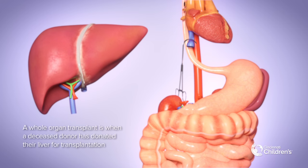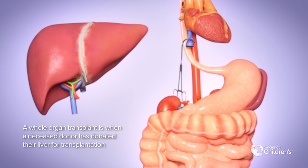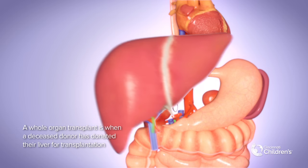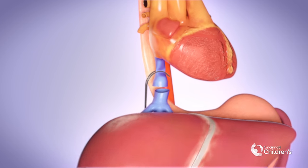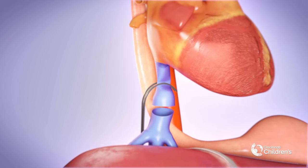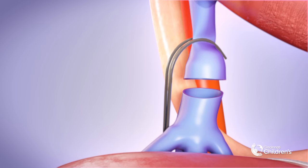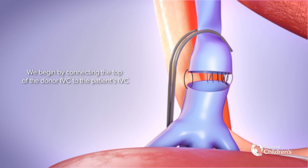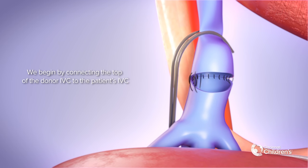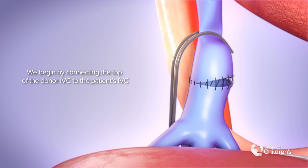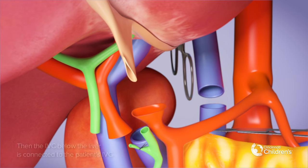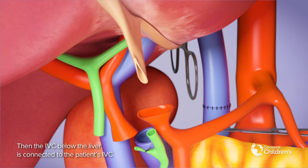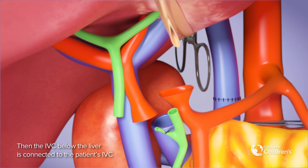A whole organ transplant is when the entire liver from a deceased donor is used for transplantation. We begin by connecting the top of the donor IVC to the patient's IVC. Then the IVC below the liver is connected to the patient's IVC.